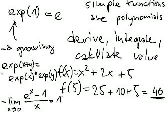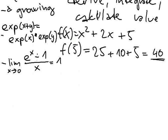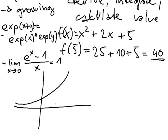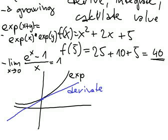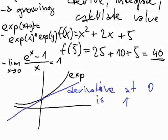Basically, this says that the derivative of e^(2x) at 0 is 1. So you have this exponential function and the derivative at 0 is 1. These are the conditions — the idea is you can define a function by properties, but from this you don't have any idea how to compute anything.